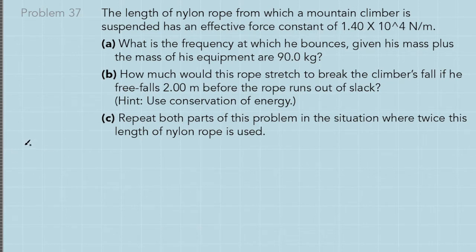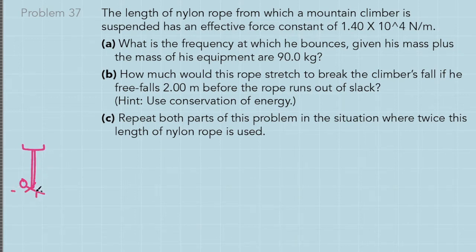Let's draw the system. Assume this is the ceiling where the mountain climber is attached, this is the rope, and this is the mountain climber at its equilibrium position. At this point, the nylon rope is neither compressed nor stretched. But it says that when given a minor nudge, he bounces back and forth. So we are asked: what is the mountain climber's frequency?